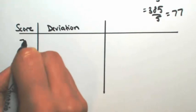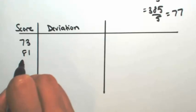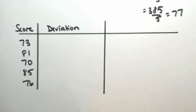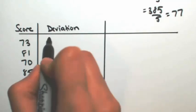So in the first column, we're going to put all of our scores. And then the second one, we're going to find the deviation from 77. So just subtract them.